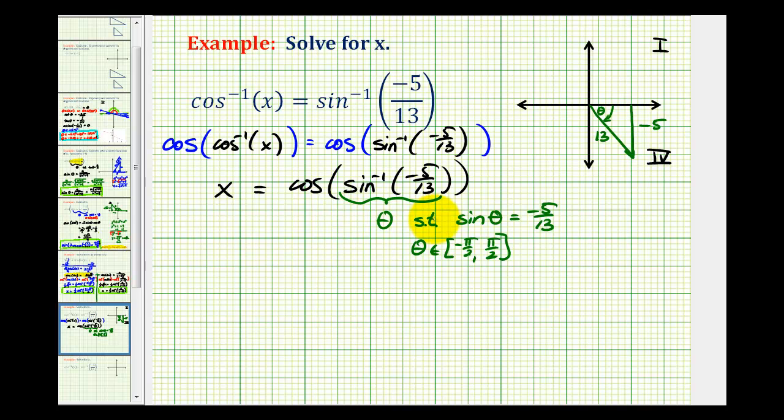Going back to our equation, if all of this equals θ, we can rewrite x as x = cos(θ). Now we can use our reference triangle to determine cos(θ).